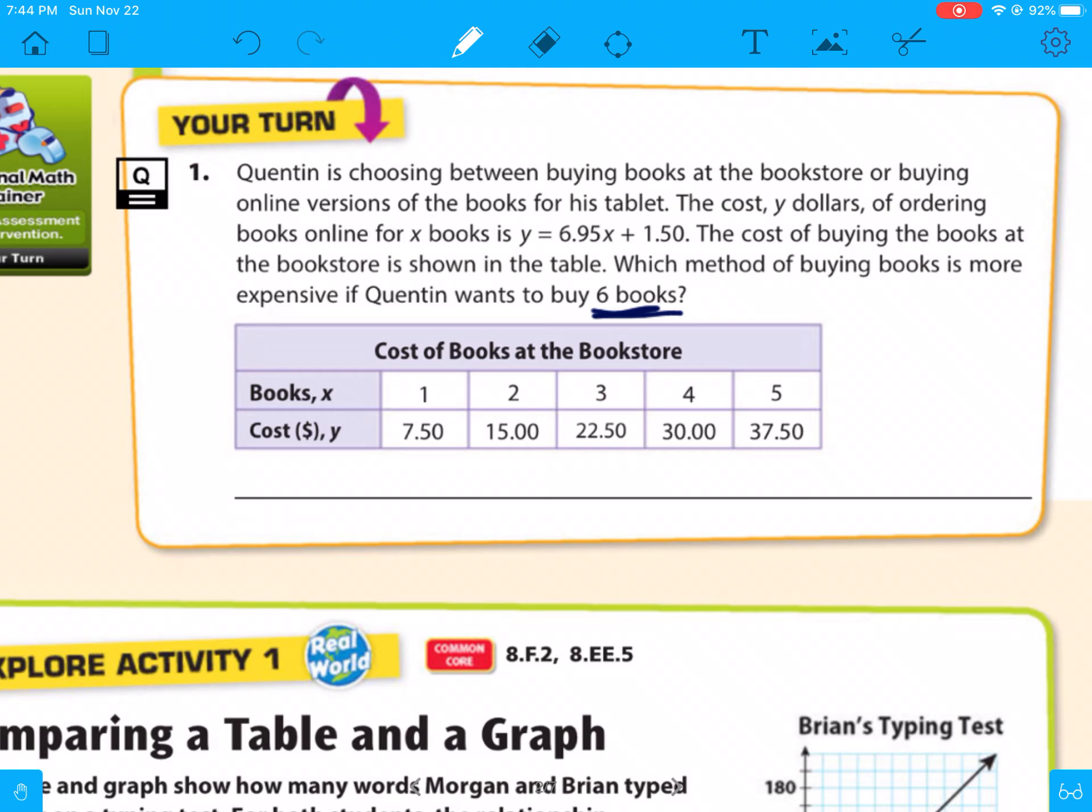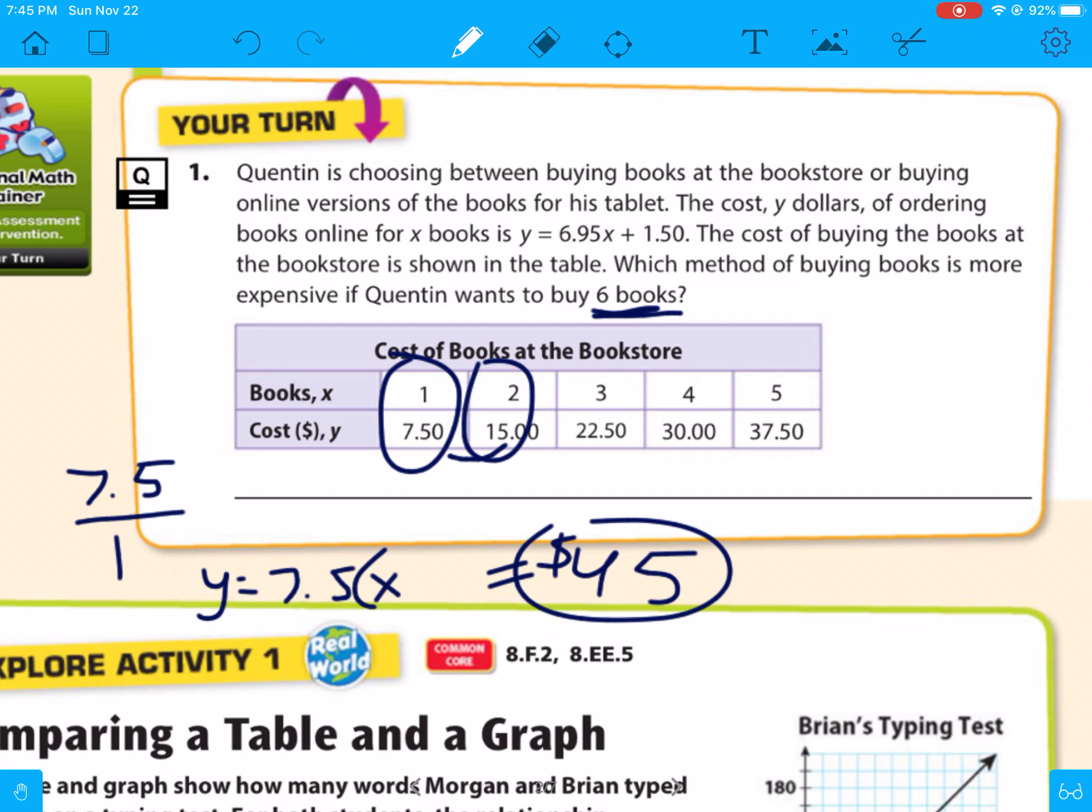So change in y divided by change in x. So we'll use these two. So 15 minus 7.50 divided by 1. So it's $7.50 per book. So if you're going to plug in a 6, so 7.5 times 6, this one is going to be $45. I just did 7.5 times 6 and got $45.